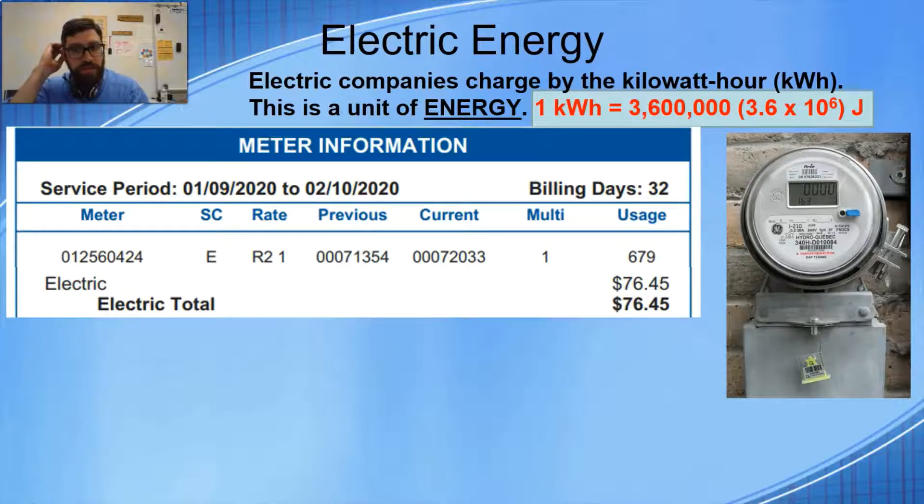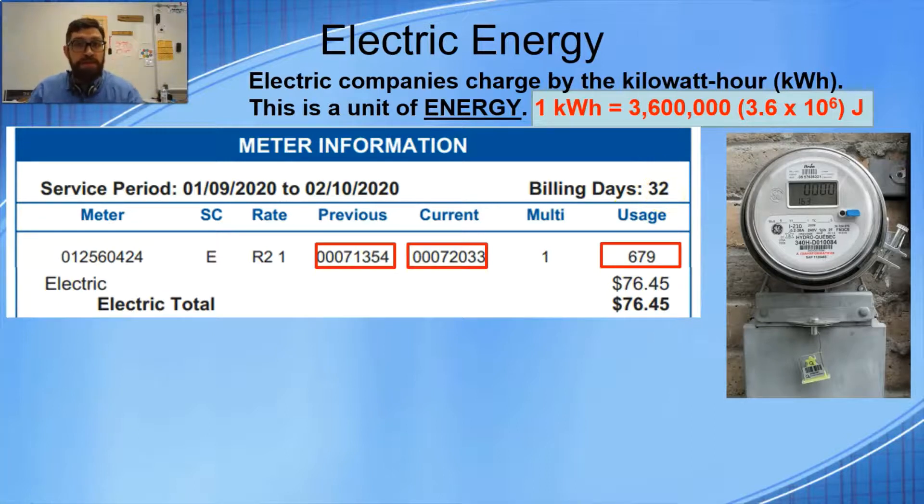This was my particular electric bill from January to February of last year. What I want you to notice is that the people from the electric company come out and take your meter reading, or some communicate wirelessly. This was the previous meter reading at the end of January. The end of February was this one. They simply subtract the two: 72,033 minus 71,354, and we get this. That tells them how many kilowatt-hours of electrical energy I used in my house over that period. And 679 - this is in the wintertime, so that's on the lower end of usage.